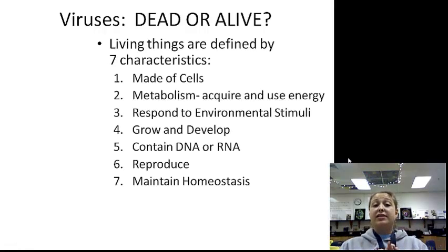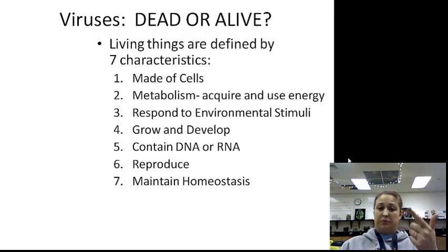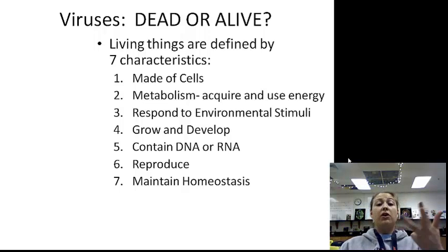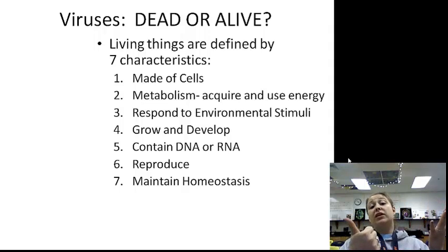Living things consist of seven characteristics of life: made of cells, metabolism, respond to environmental stimuli, grow and develop, contain DNA or RNA, reproduce, and maintain homeostasis.